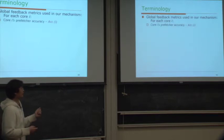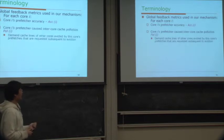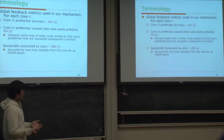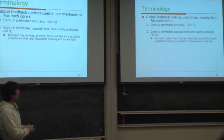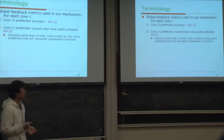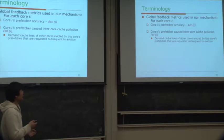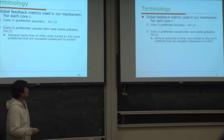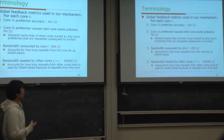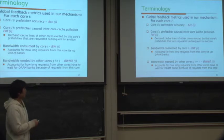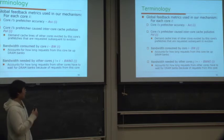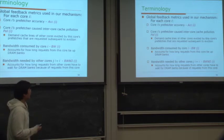The global feedback metrics include the prefetch accuracy for each core ACC_i, the cache pollution caused by core i's prefetcher—defined as demand cache lines of other cores evicted by core i's prefetches that are subsequently requested—and the bandwidth consumed by core i as well as the bandwidth needed by other cores j. These metrics capture how long core i's requests occupy DRAM banks and how long other cores' requests must wait.